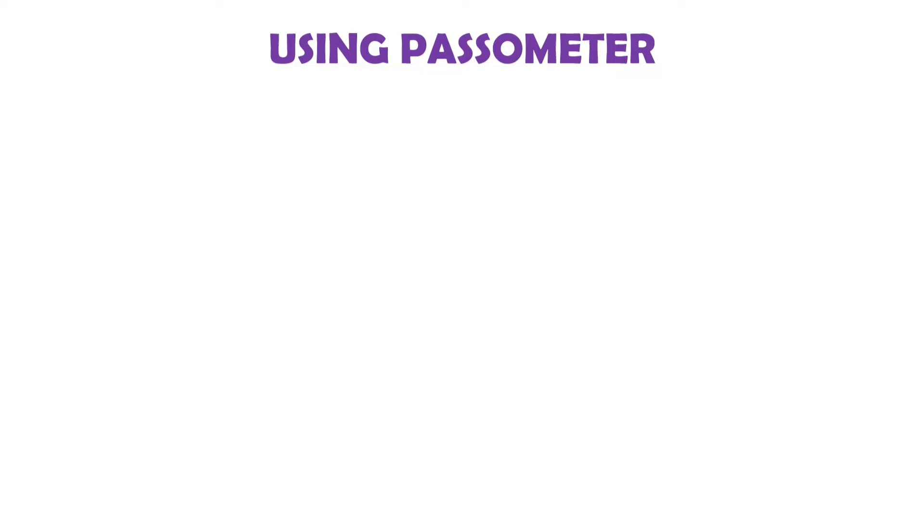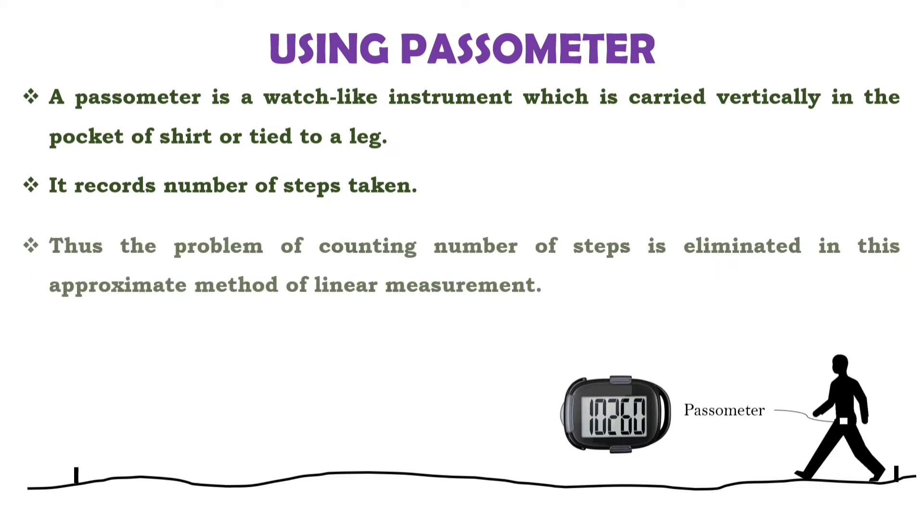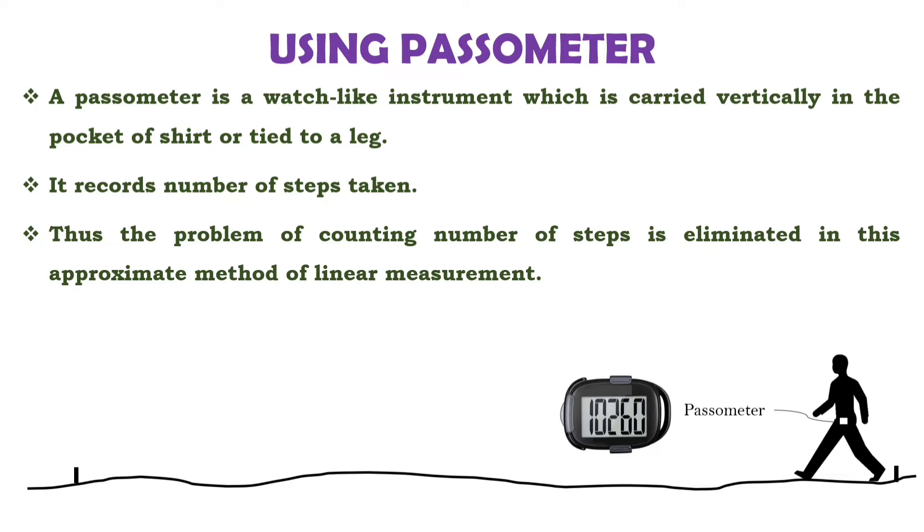The second method, that is using passometer. In this method, a passometer is used. A passometer is a watch-like equipment, as you can see here, which is carried vertically in pocket of shirt or it is tied to a leg. The passometer counts the number of steps taken and records it. In this method, there is no need of remembering the steps taken by a person. We can say the problem of counting number of steps is eliminated in this method.